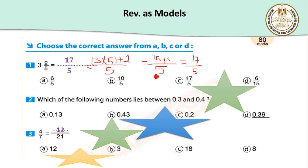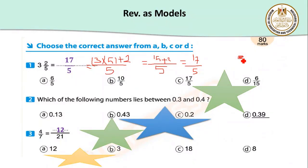I need all of you to answer in detail in your exam. Number two: which of the following numbers lies between three-tenths and four-tenths? Let's remember together the decimal number. This is a decimal point — it joins between the whole number and the decimal part.